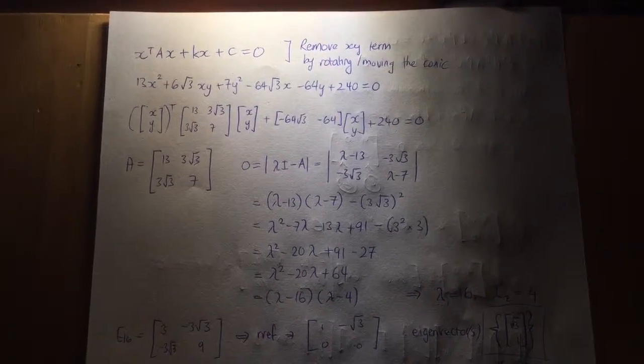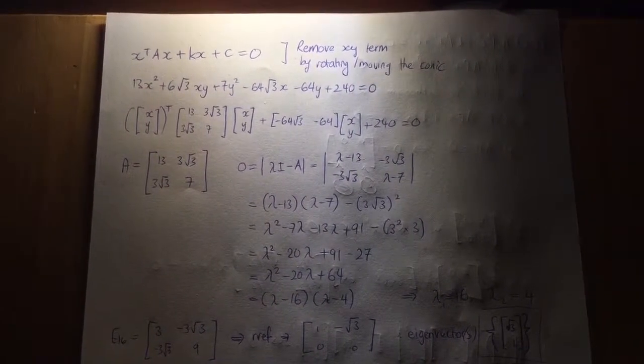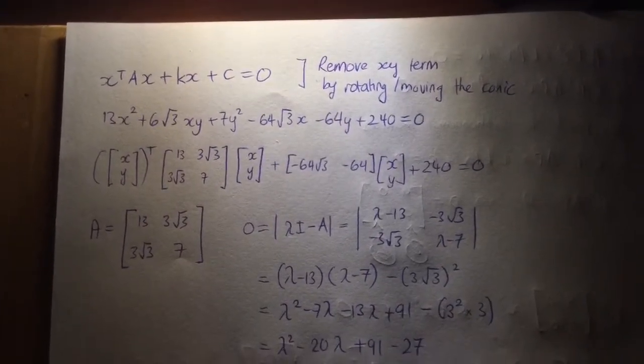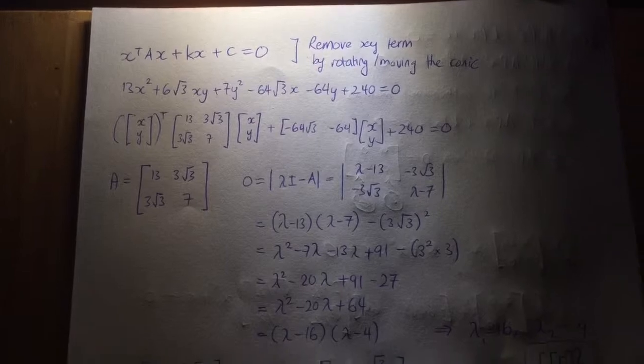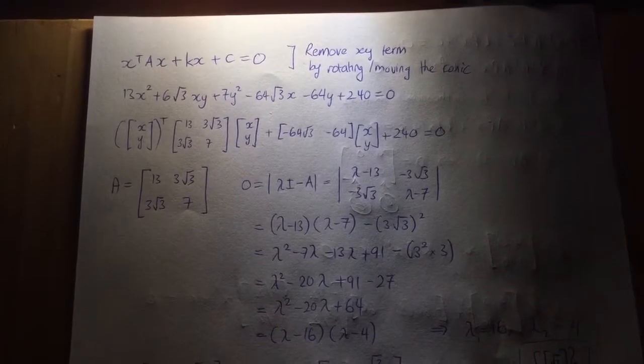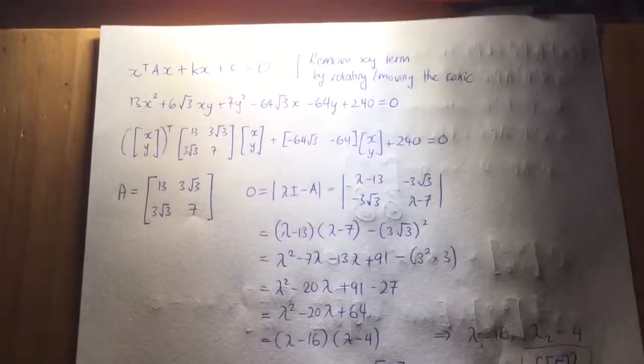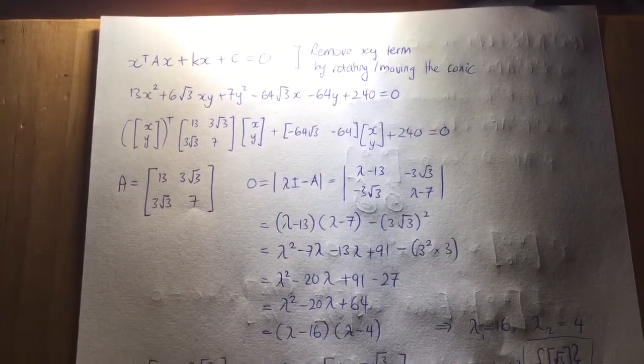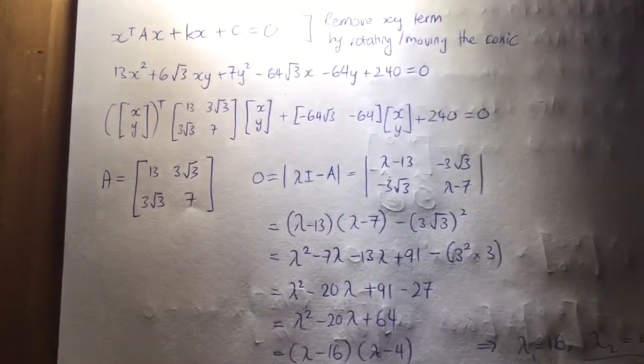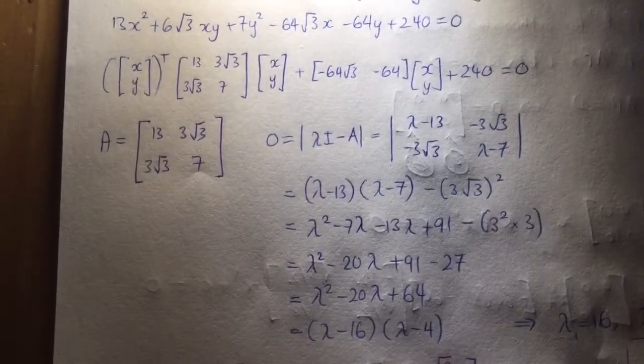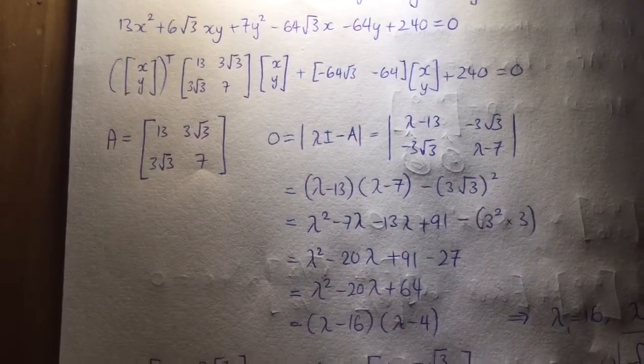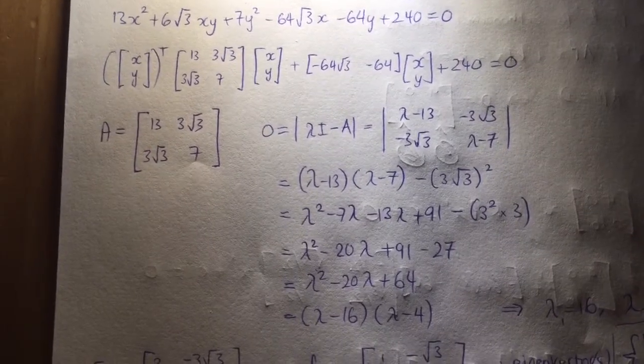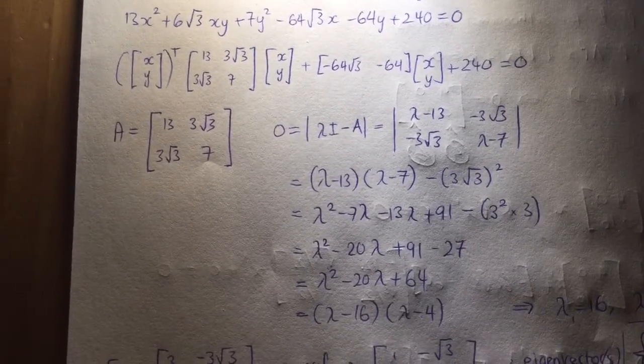Alright, so in this video we're going to be looking at a few conic sections, and you'll notice that they have x and y terms in them, and what we want to do is remove those xy terms by essentially just rotating around the set of axes that we have. We're given an equation: 13x² + 6√3xy + 7y² - 64√3x - 64y + 240 = 0.